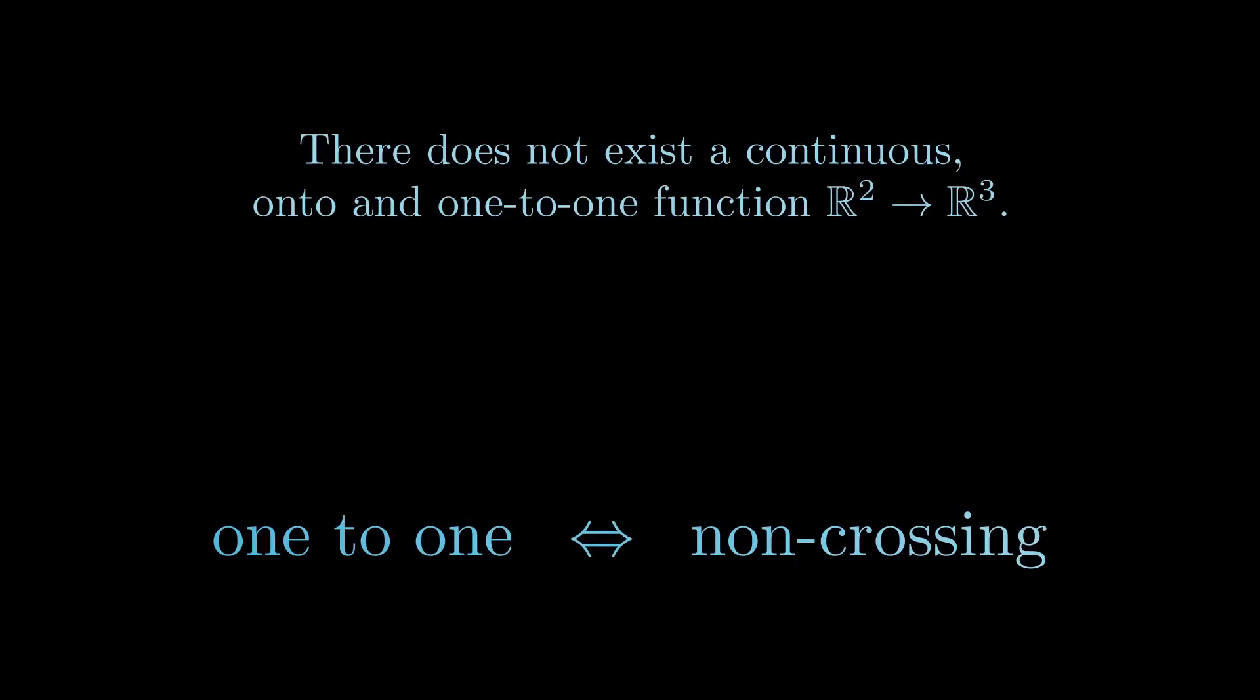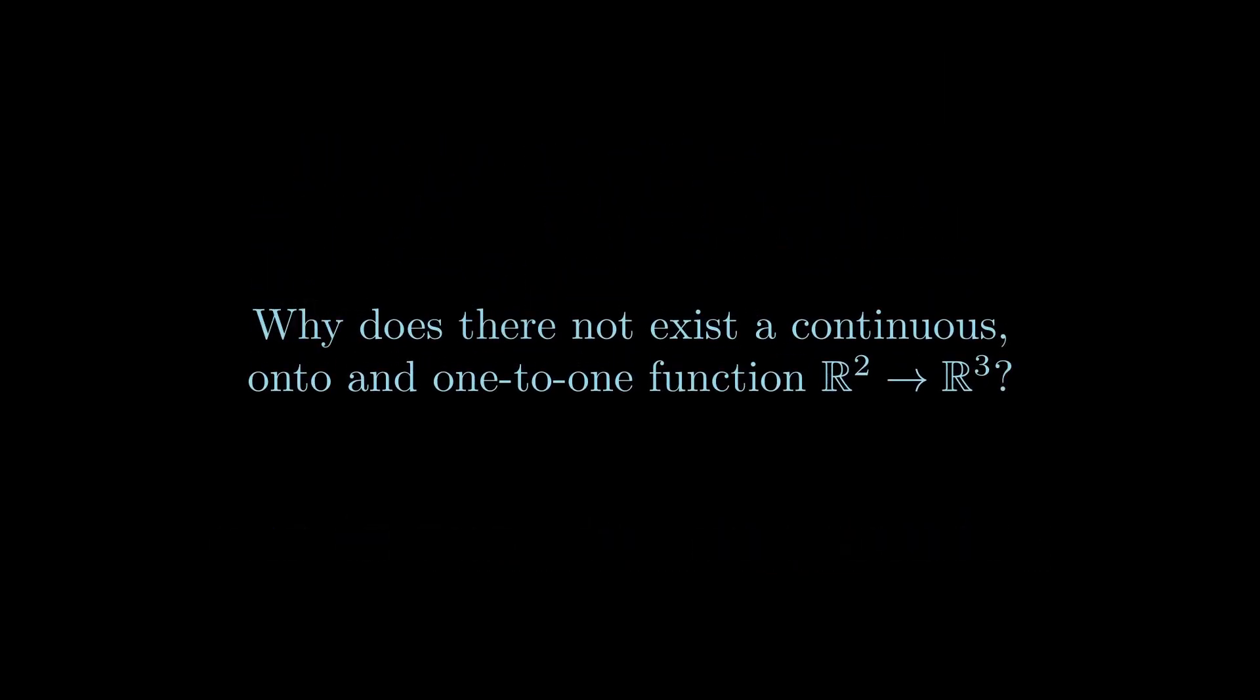In our context this essentially means that you cannot scribble and fill in the square without crossing over yourself, which is a really surprising fact that means somewhere in our construction our lines crossed over themselves. To see why this is the case and how it's connected to donuts and coffee mugs, please subscribe.